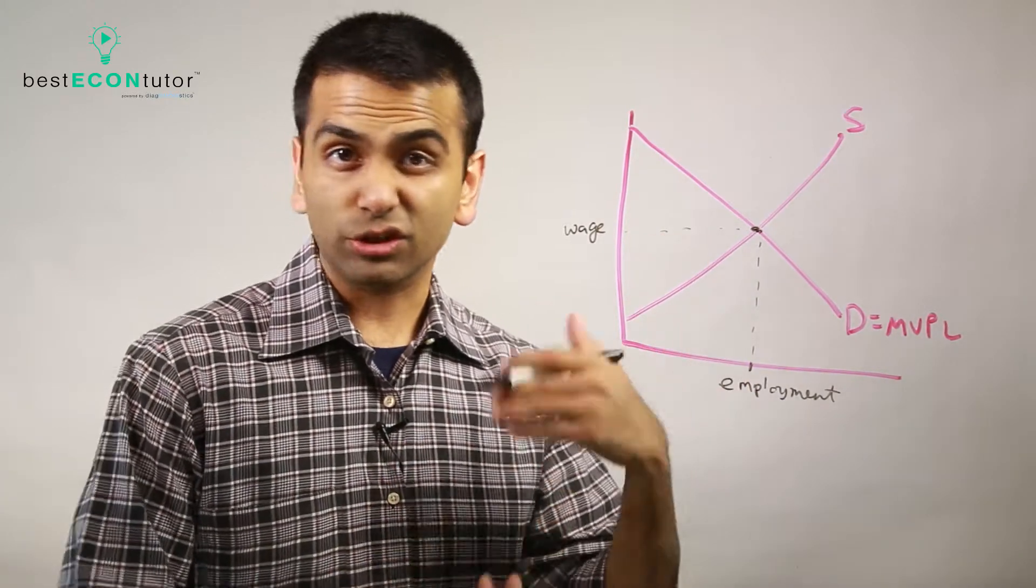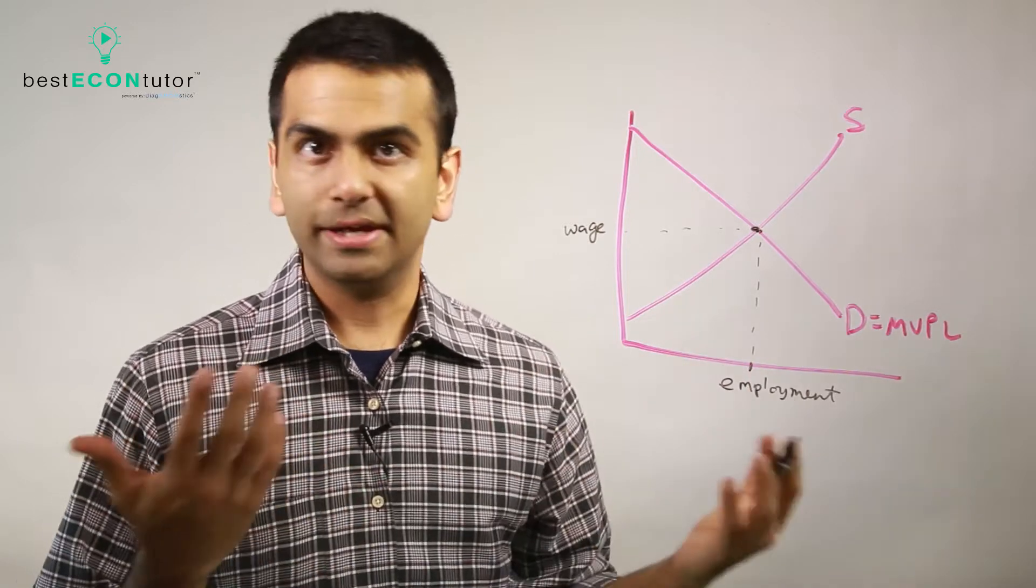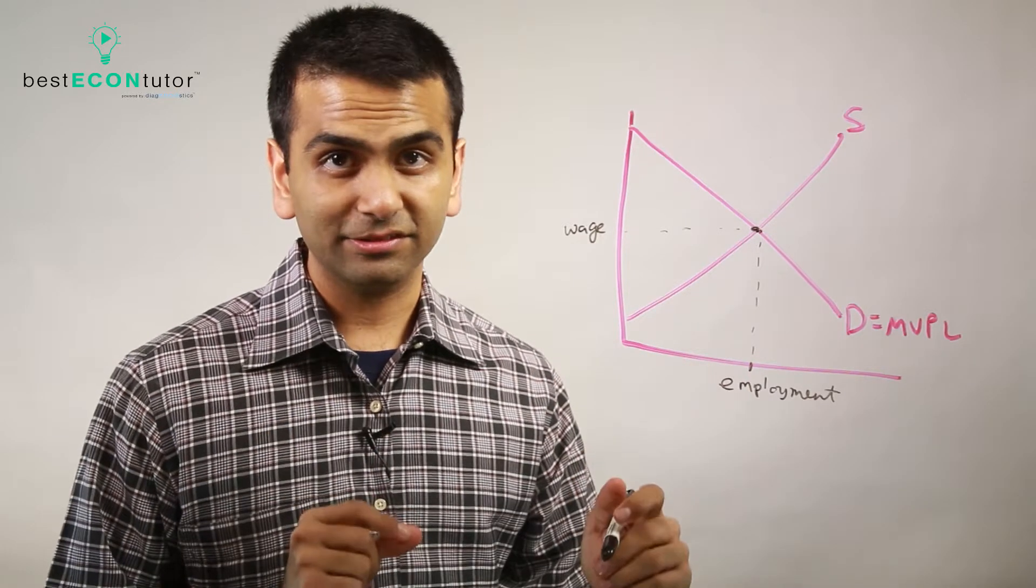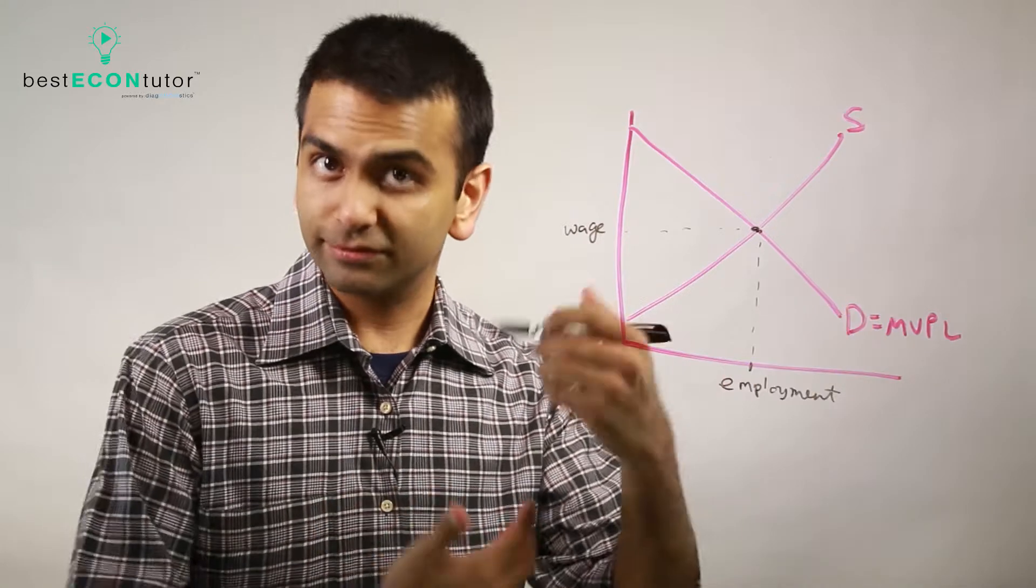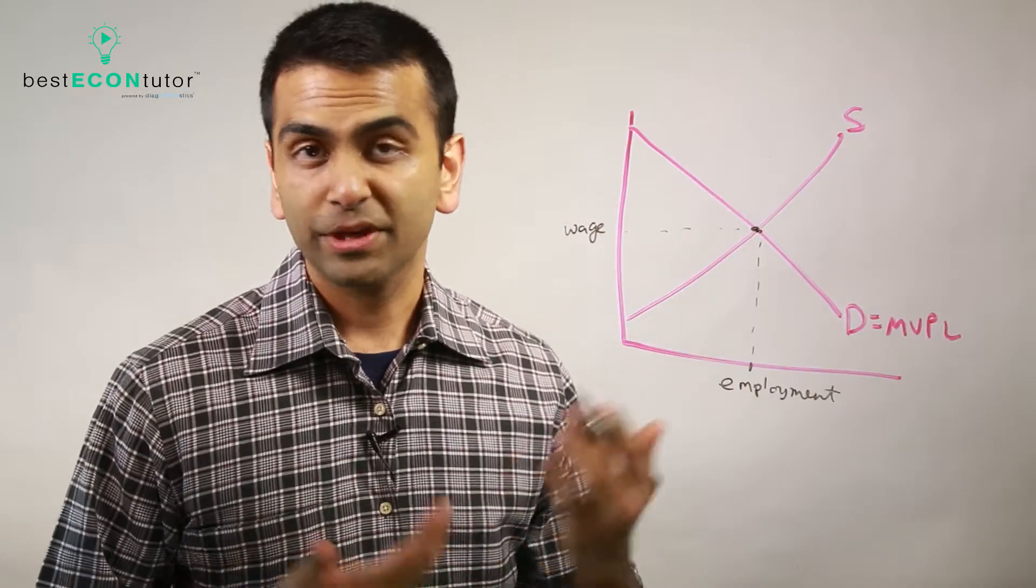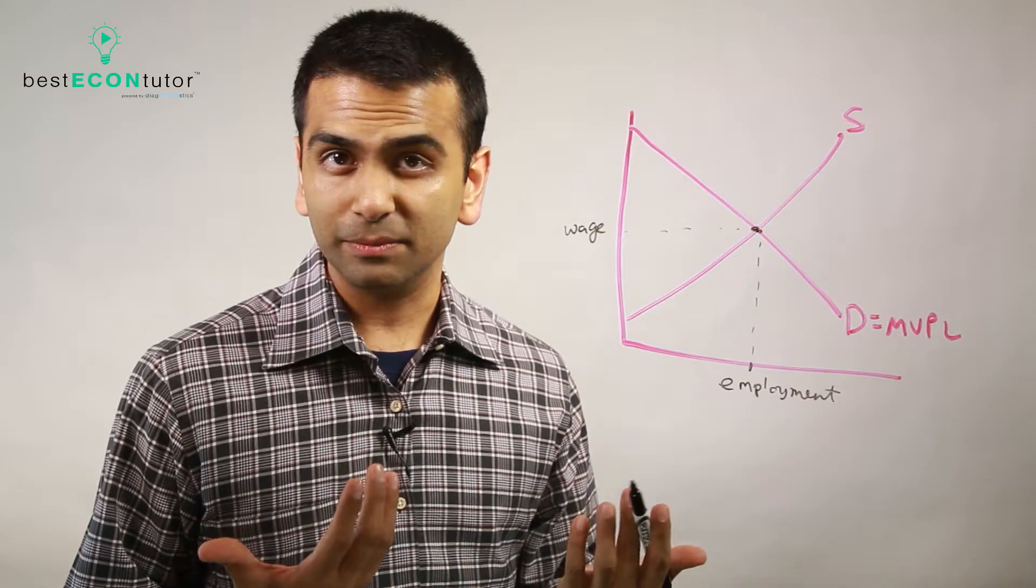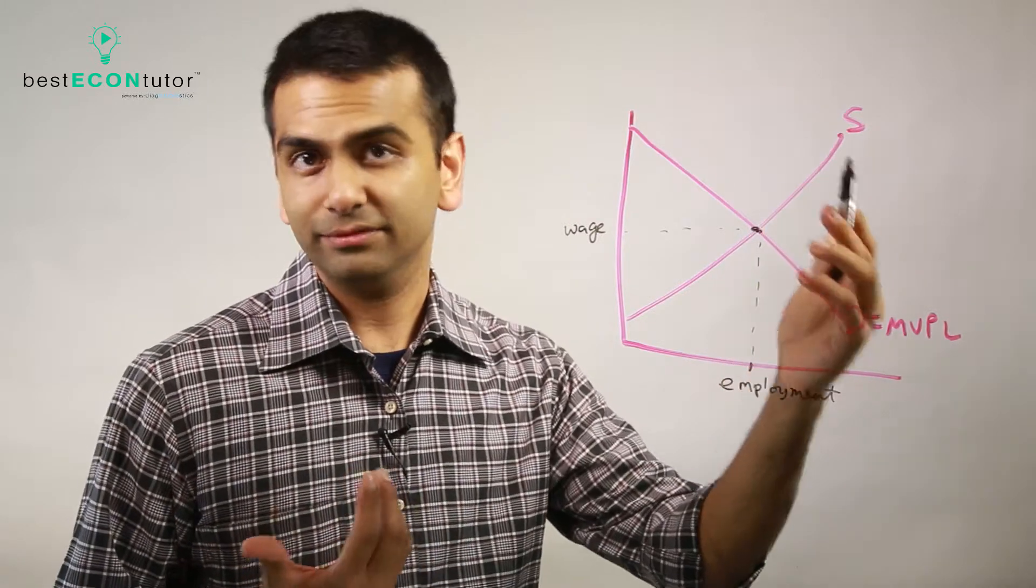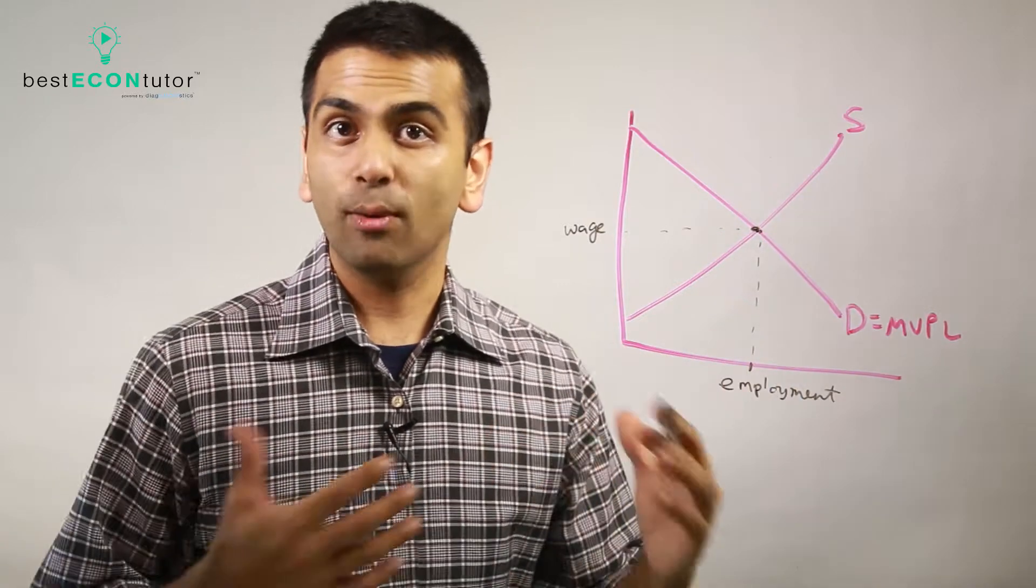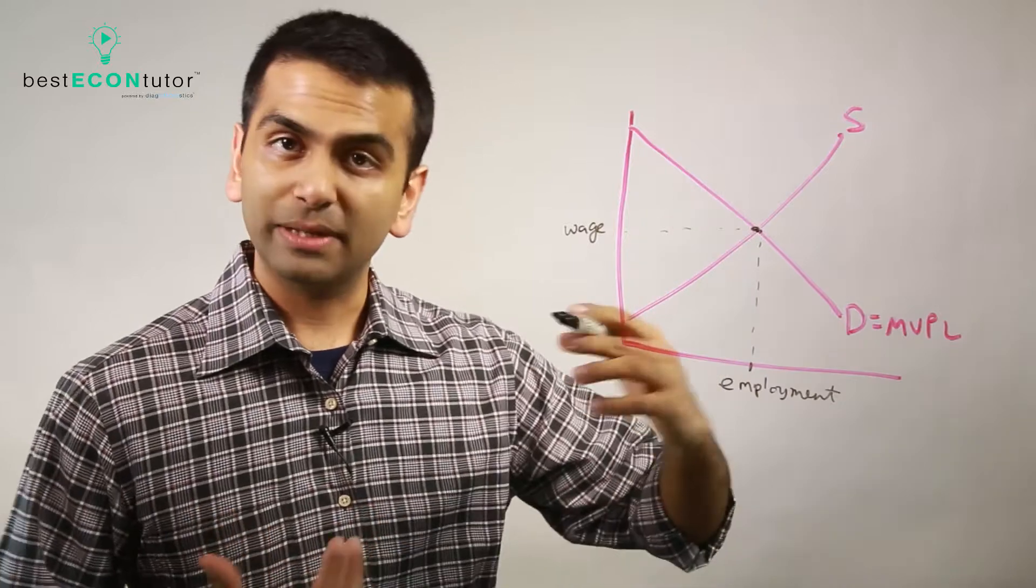Now here's a question. What would make either of these curves shift? Well, all you got to do is think about whether the event in the real world affects the businesses, which are actually the demand curve for labor, or the workers, which are supplying labor. So if there's like something related to the taxes that the workers have to pay, that's going to affect the supply curve. And you can imagine if taxes go up, you want to work less, so that shifts to the left. Or if taxes are lowered, supply would shift to the right.